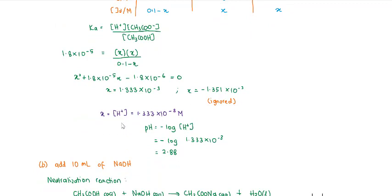After you get the concentration of H⁺, you can calculate the pH. So that is how you calculate the pH of a weak acid — that's how you do it.